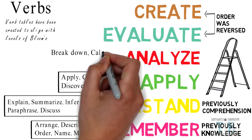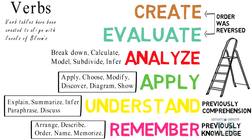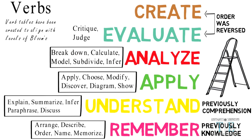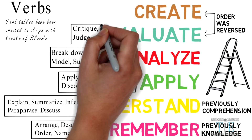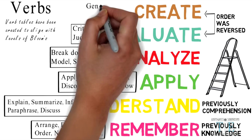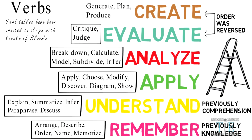Breakdown, calculate, model, subdivide, infer are all aligned with analyze. Critique and judge are aligned with the evaluation level. And lastly, generate, plan, and produce are aligned to the top level of cognition, which is create.